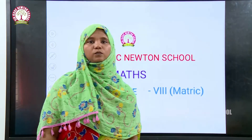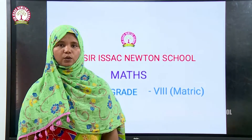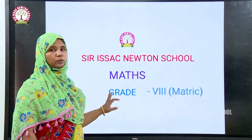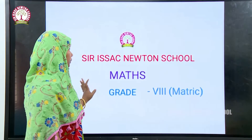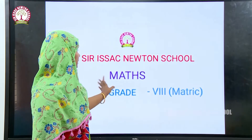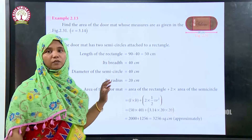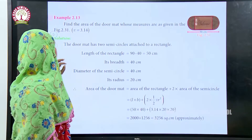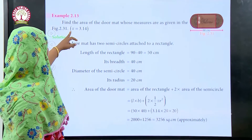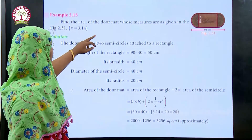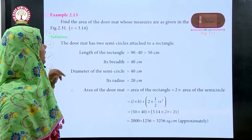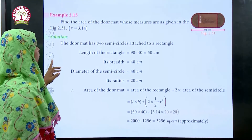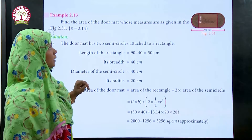Hello children, warm greetings to you all. In today's session we are going to continue with the word problem — to find out the area of the combined shapes. Look at the example: find the area of the doormat whose measures are as given in the diagram.